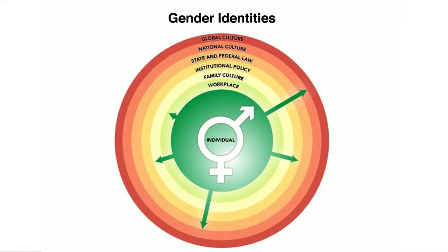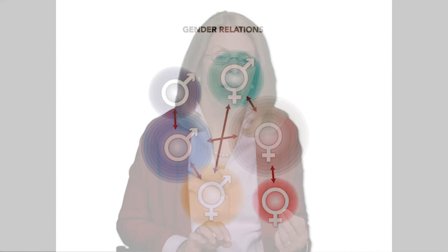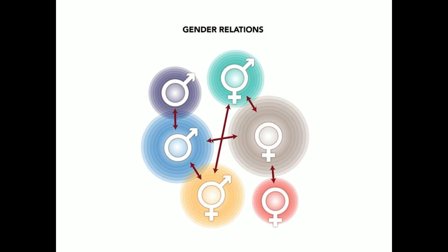Gender norms are different in these places, and I will adjust my behavior and identity accordingly. We now come to gender relations. Gender relations refer to empirical observations of the actual roles women and men take on and how they interact in a particular cultural and social context. Gender relations refer to the power relations between individuals of different gender identities. Gender relations mediate relations between men, between women and women, between women and men, and between transgender individuals and men, for example.